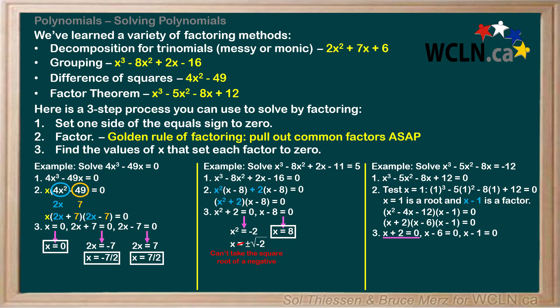Starting with the factor of x + 2, we subtract 2 from both sides to give us x = -2. Moving on to x - 6, we add 6 to both sides to get x = 6. Finally, for the factor of x - 1, we add 1 to both sides to give us x = 1. These three values of x are the solutions to this equation.